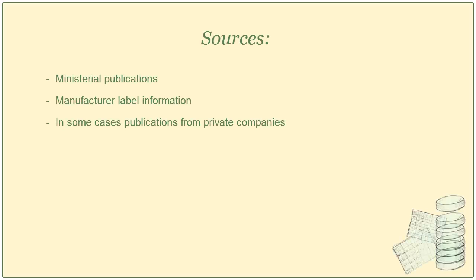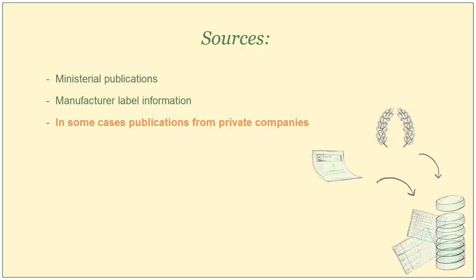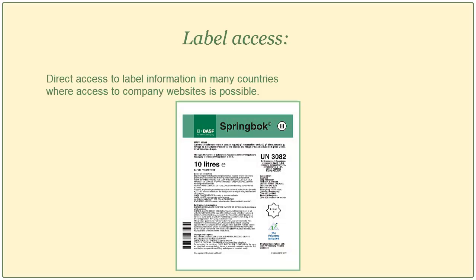HOMOLOGA gets its information from several sources such as the ministerial publications from the ministries of agriculture in the different countries, the label information from the manufacturers and from publications provided by private companies. The new version of HOMOLOGA gives you direct access to label information in many countries where access to the company website is possible.